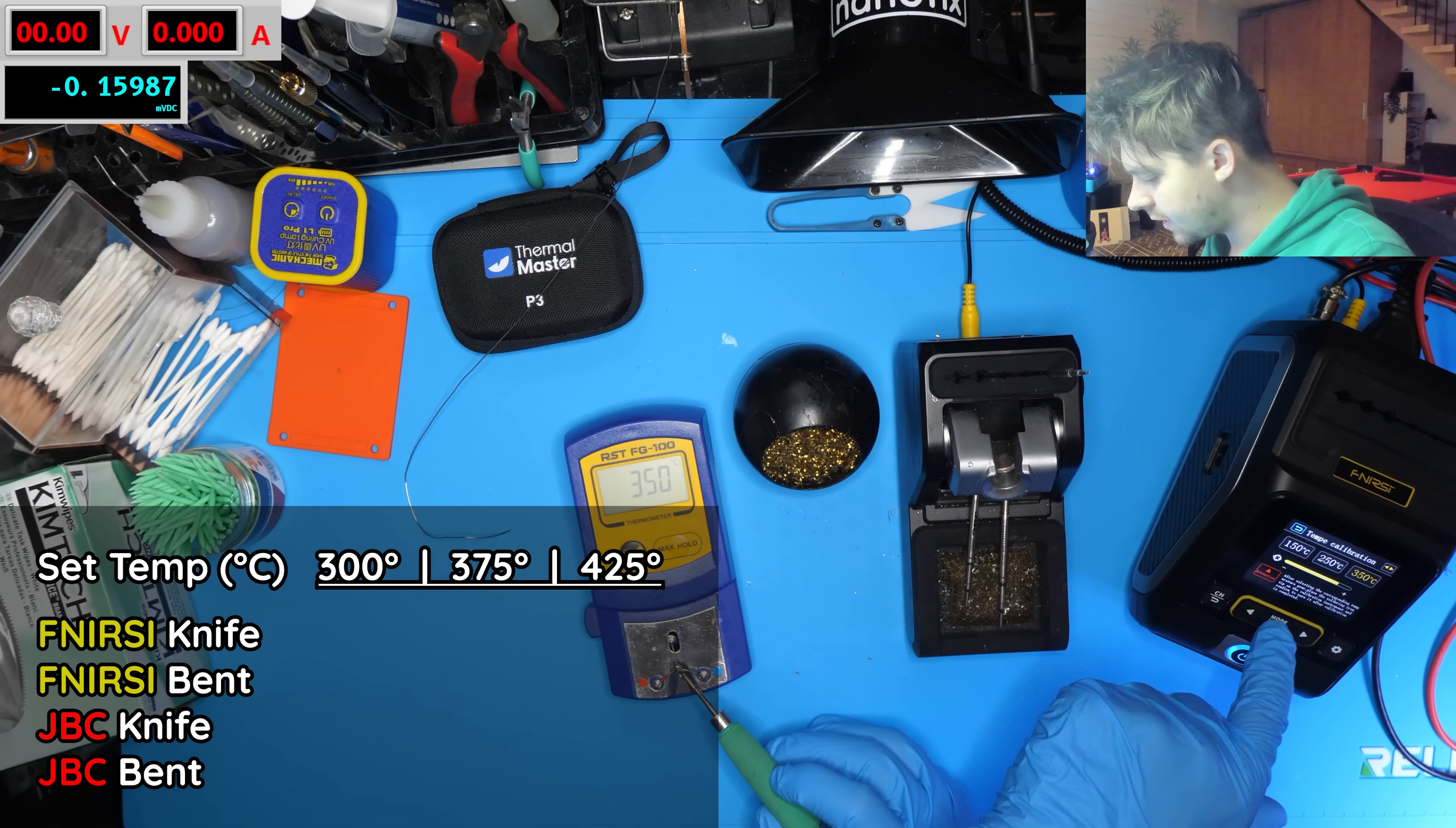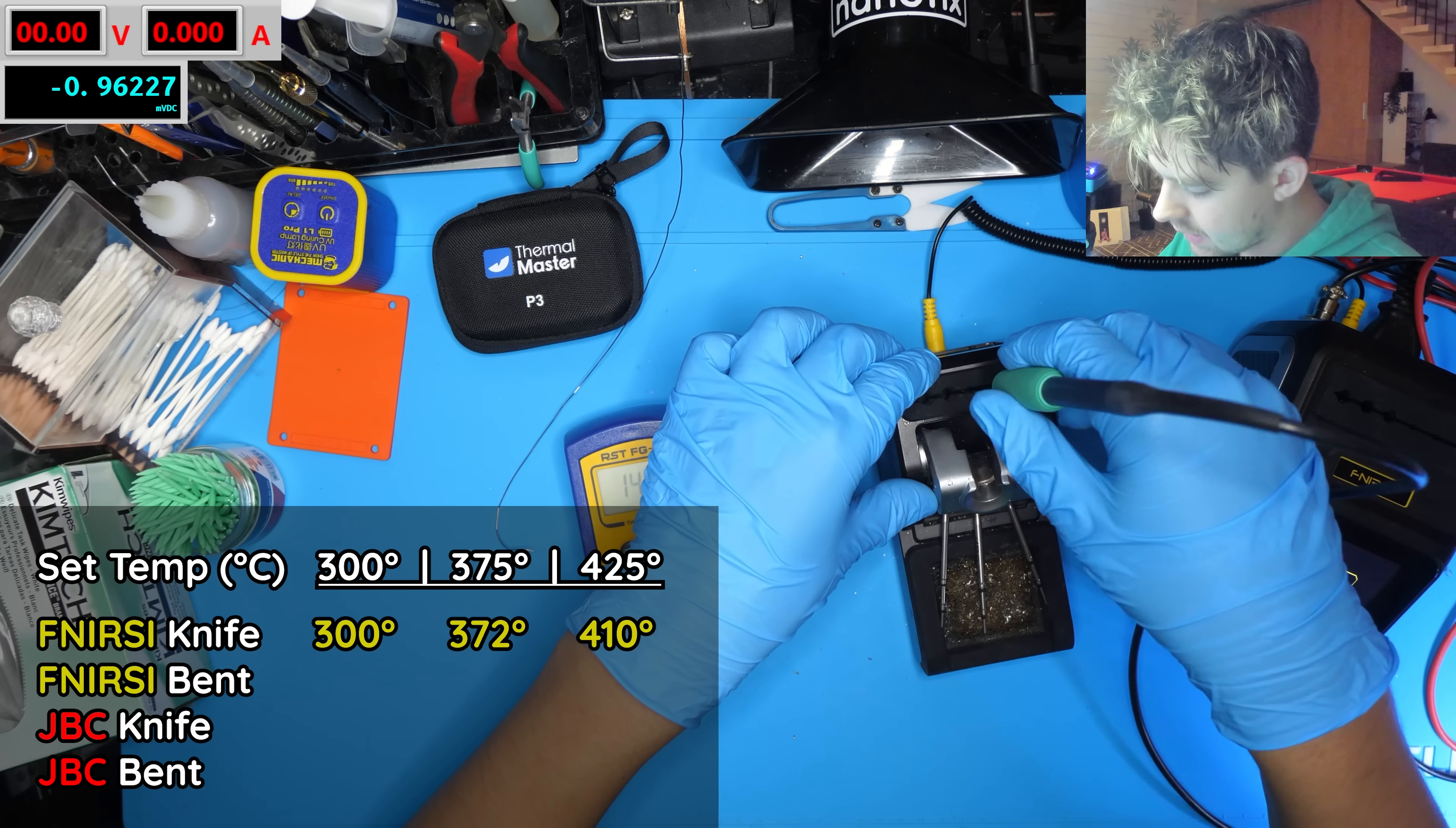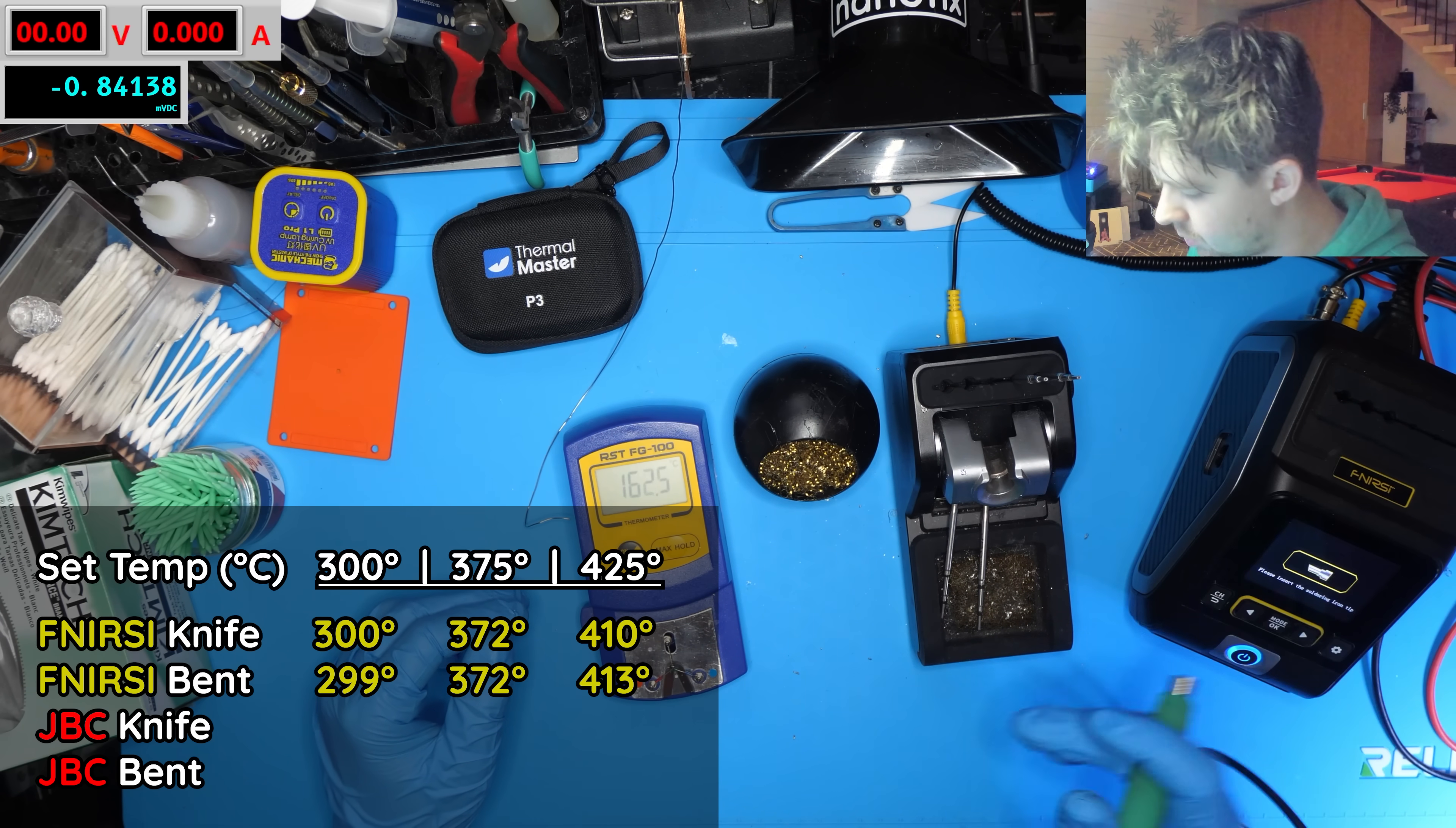We've got this calibrated. Let's test 300 with the knife tip - we're spot on at 300. Then 375 - ridiculously close, we'll call that 372. And then 425 - this is at 410. Same tests now with the Furnersi bent conical tip. We'll go back down to 300 - again spot on, this is 299. Let's go up to 375 now - 372, not bad at all. And then 425 - 413. Those actually did way better than I thought they would to be honest with you.